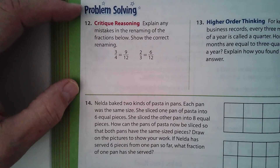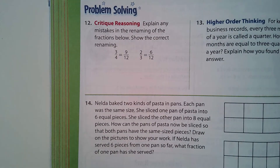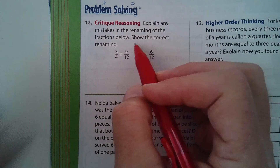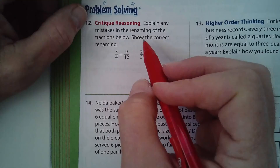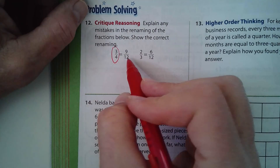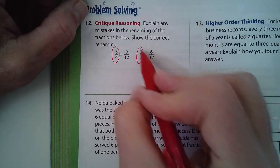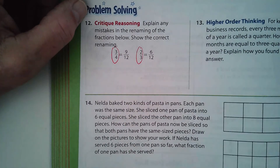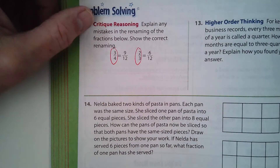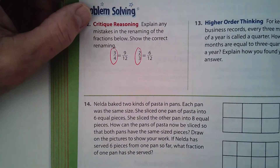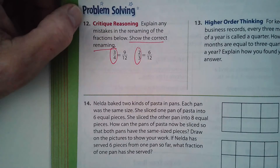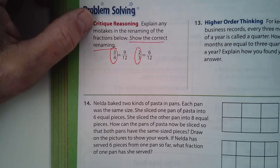Let's look at number 12. It says explain any mistakes in the renaming of the fractions below. We're starting with three-quarters and somebody changed it to nine-twelfths, and two-thirds changed to six-twelfths. I'm not going to do more than ask you to show the correct renaming, because a mistake was made somewhere. I want you to look at it and think about it.